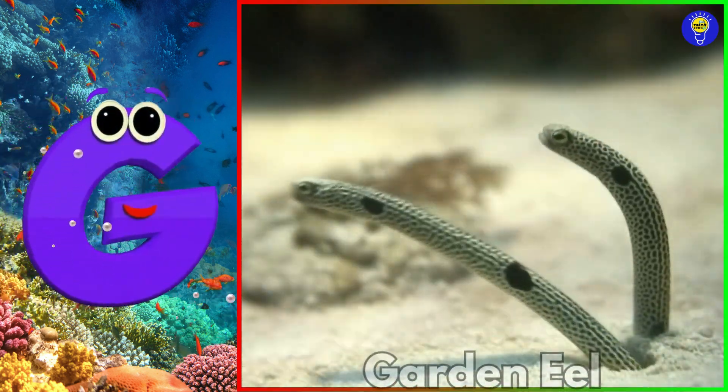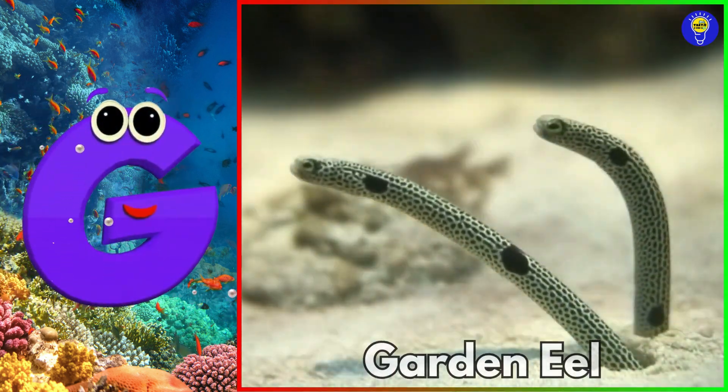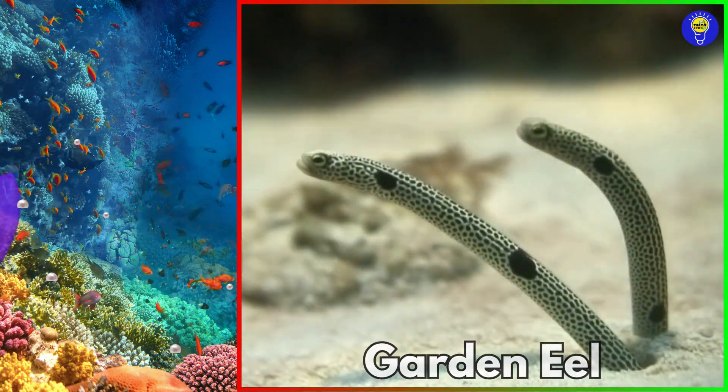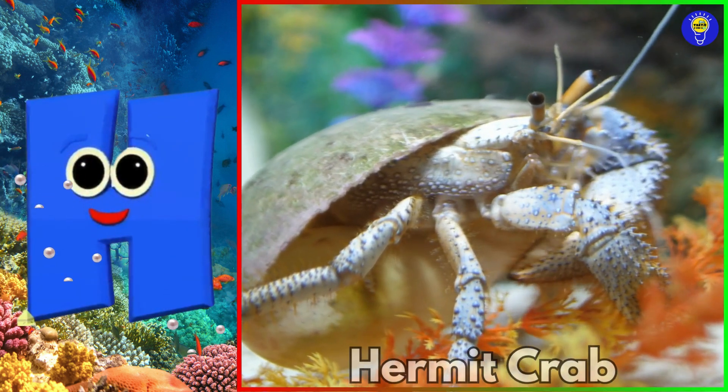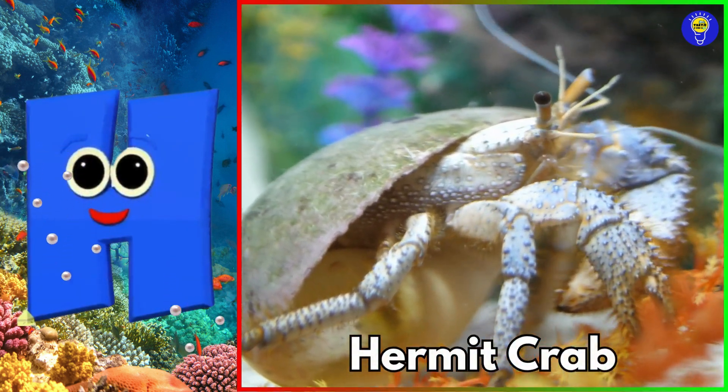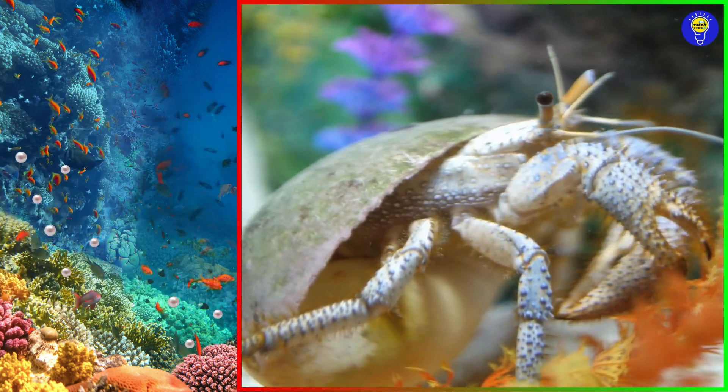G is for garden eel. Guh, garden eel. H is for hermit crab. Ha, hermit crab.